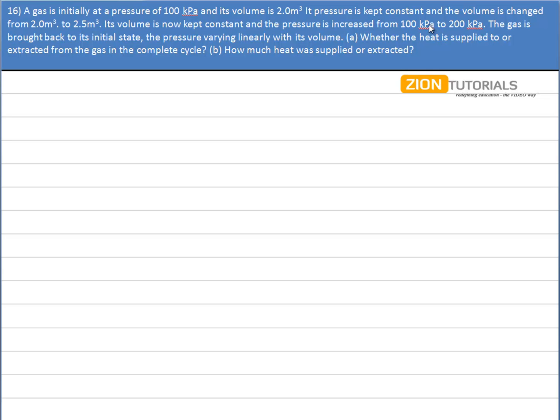A gas is initially at a pressure of 100 kPa and its volume is 2 m³. Its pressure is kept constant and the volume is changed from 2 m³ to 2.5 m³.